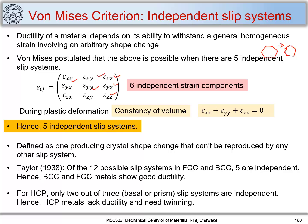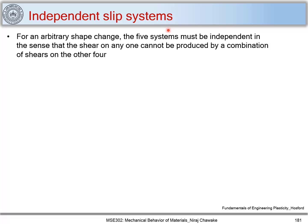We need five independent slip systems to accommodate any shape change or to have ductility. When I say independent slip system, that means for any arbitrary shape change the five systems must be independent in the sense that the shear on any one cannot be produced by a combination of shears on the other four. So if I have five systems labeled one through five, the shear produced by slip system one cannot be produced by any combination of shears from the remaining four slip systems.